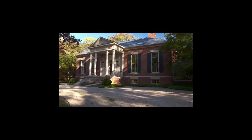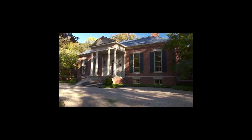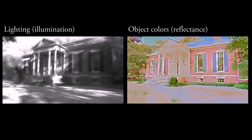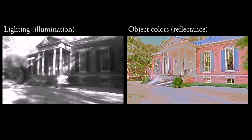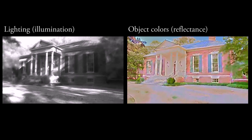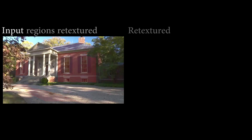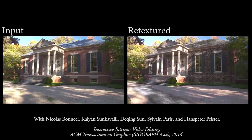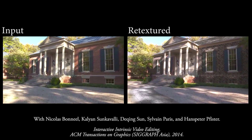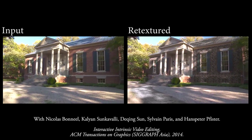Often, editing the appearance of objects in videos is hard because of the lighting in the scene. However, if we decompose the scene into just the lighting and just the colour of objects, we can easily change the brickwork and roof tiling of this house while maintaining the light which breaks through the surrounding tree leaves.